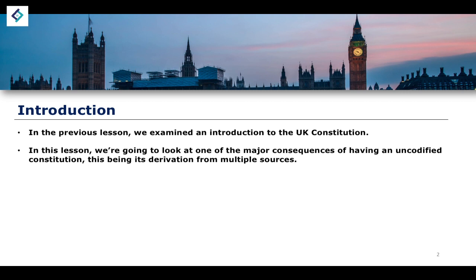Unlike, for example, the United States — which is a very good example to use since it is central to the comparative politics element of our A-level syllabus — we have a single codified document. And as a result of that, there is one source of the US Constitution, that is the document itself. Whereas when we think about an uncodified Constitution, it not being all written down in one place, there not being a single source of authority, the consequence is that it is derived from multiple different sources, some of which are written, some unwritten, some legal, others non-legal.